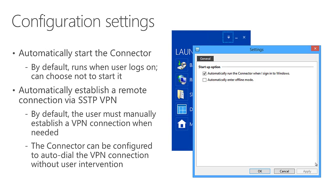Looking at the configuration settings, this has been greatly simplified over previous versions of the Launchpad, primarily because those alerts are going away. We're no longer interested in which kinds of alerts we see. What we do see is whether or not we want to run the Essentials Connector when you sign into Windows, and here we can also set whether or not we want to automatically enter offline mode.